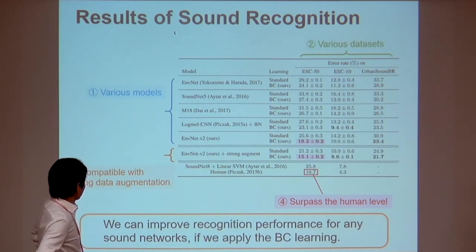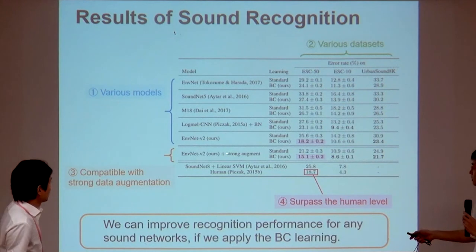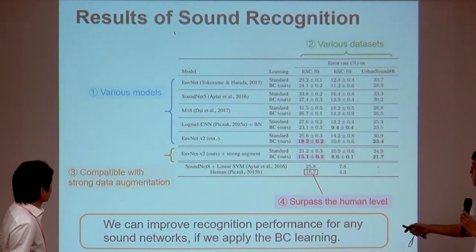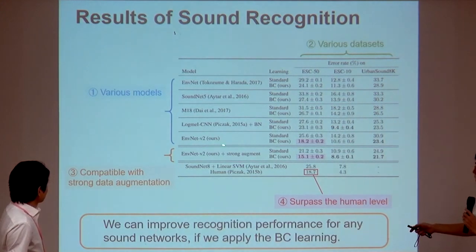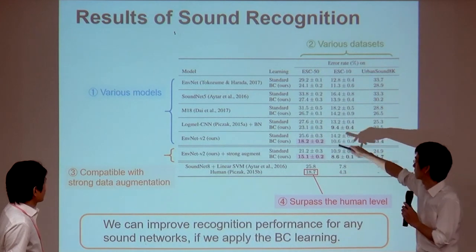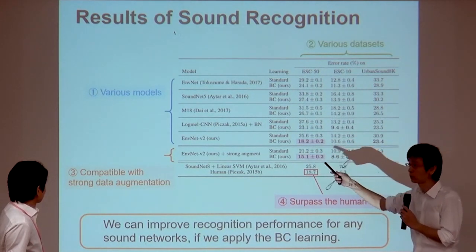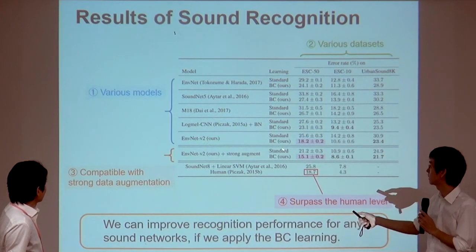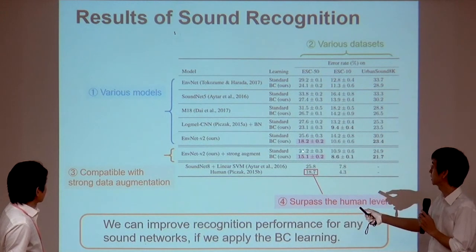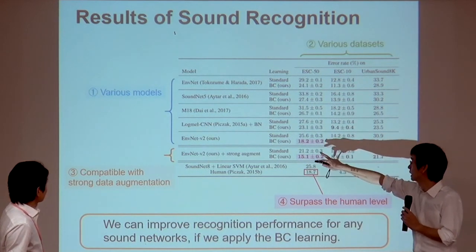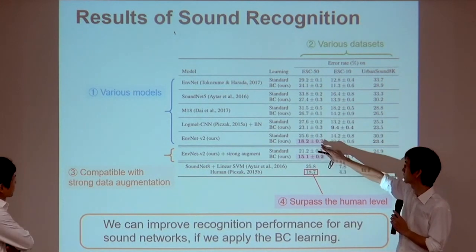A question was asked about whether BC learning is a form of data augmentation, and whether it was compared to other augmentation methods. The speaker confirmed this and showed results: with strong augmentation applied to EnvNet version 2, the classification error rate is 21.2%. Applying BC learning to EnvNet gives a performance of 18.2% error rate, which is smaller than the strong augmentation baseline. Someone also mentioned that a session proposed sophisticated data augmentation with GANs.